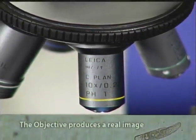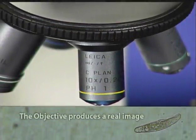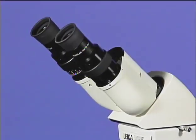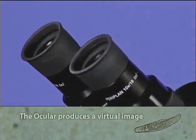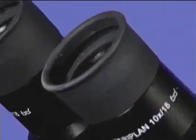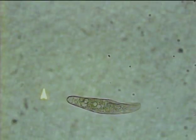The objective lens system produces what is called a real image. This image cannot be seen directly, but can be projected to the ocular lens system, which then produces what is called a virtual image. This virtual image is what you actually see when you look into the microscope.